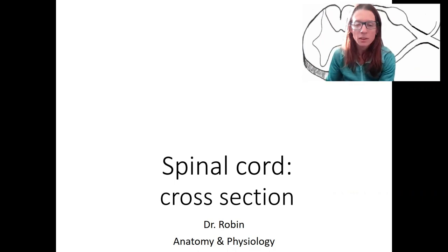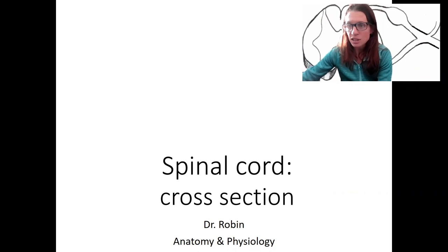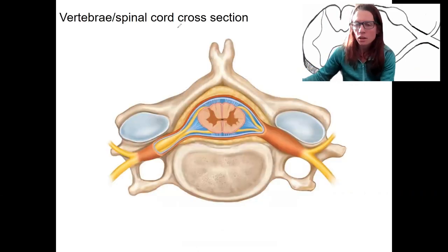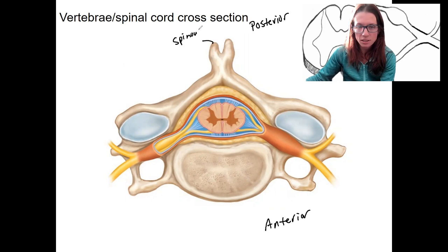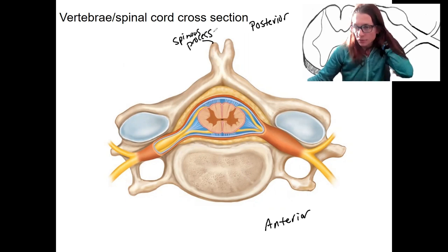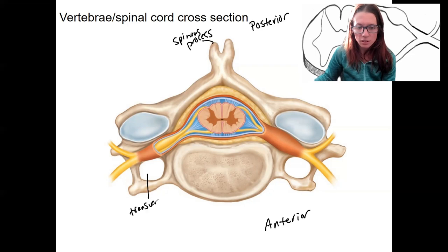We are going to talk about the spinal cord now, the other part of the central nervous system, and we're going to take a cross-section, starting with the whole thing within a vertebrae. You've seen the anatomy of vertebrae in lab. From this cross-section, you can tell this is your posterior or dorsal side, and this is anterior. The easiest way to recognize that is this is your spinous process, which you can often feel in your vertebrae. It's forked here — this is going to be a cervical vertebrae.